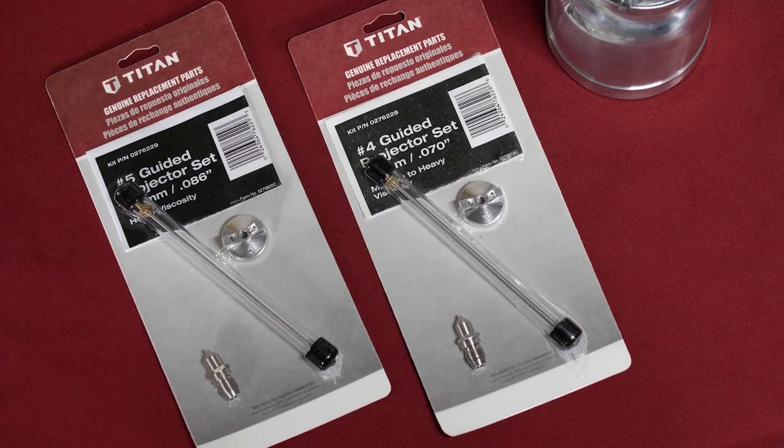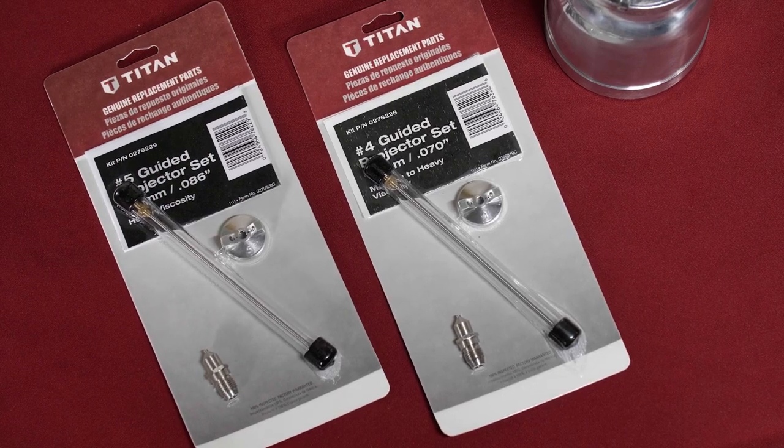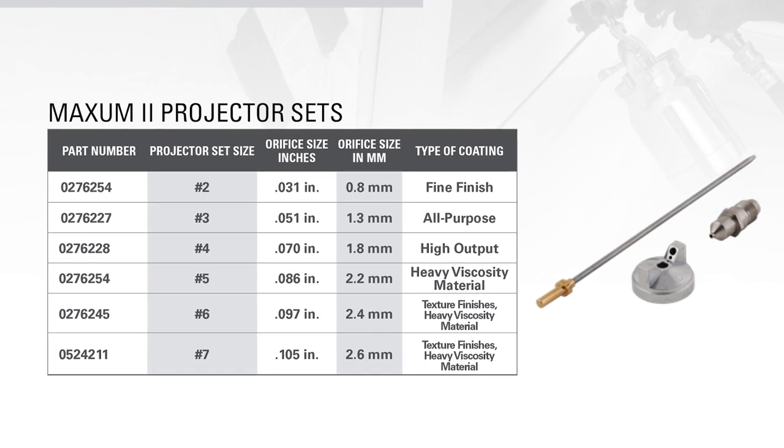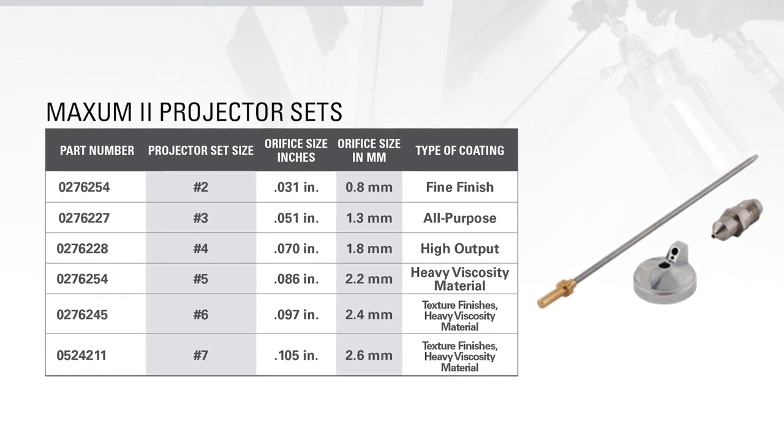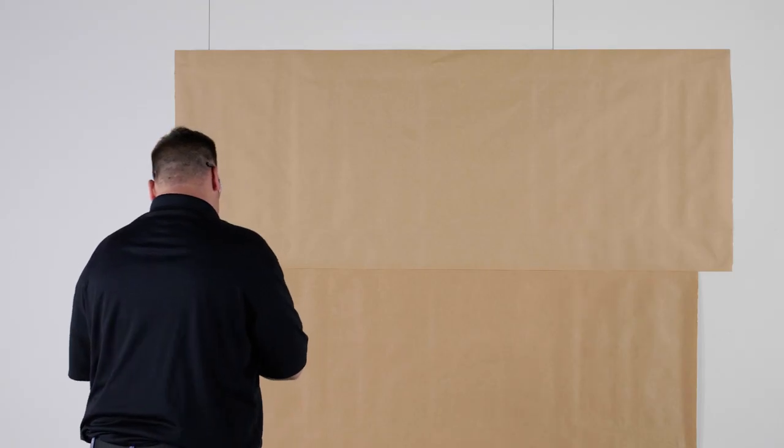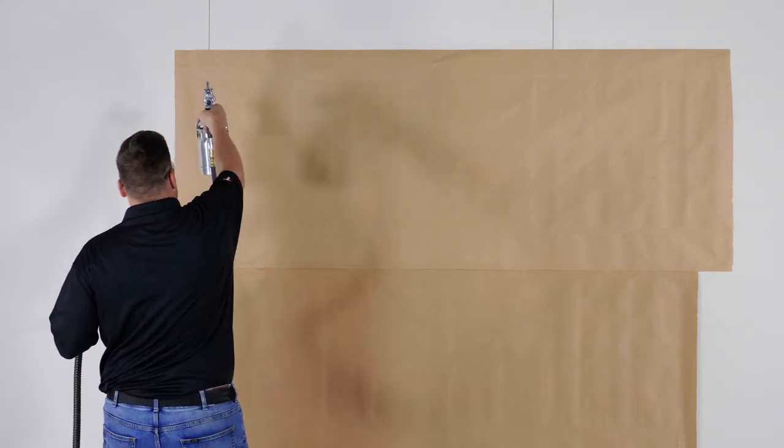The last thing to cover is selecting the correct needle for the material you will spray. Use the chart supplied in the owner's manual to select the best needle for your material. Remember to test your pattern to determine if any coating adjustment is needed.